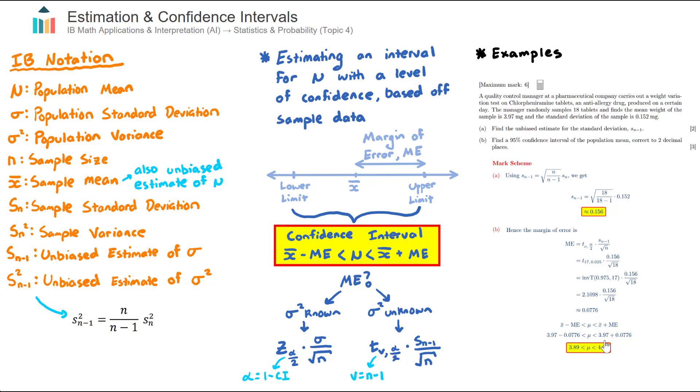I then add that to x̄ to find the upper limit of the interval and subtract that from x̄ to find the lower limit of the interval. In this case here, again, this is a 95% confidence interval. So in conclusion for this question, we are 95% confident that μ, the average weight of all of the tablets, will lie within the interval 3.89 and 4.05.